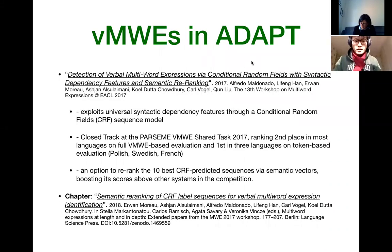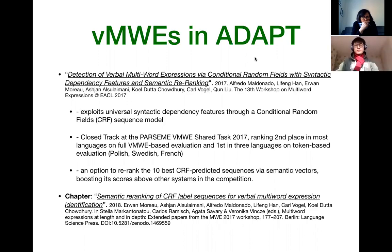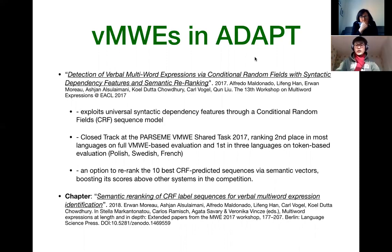Let's look at multi-word expression research in ADAPT earlier. I joined a shared task with a Trinity colleague in 2017 with Alfredo and Ash. In that shared task we submitted a system using Conditional Random Fields to detect verbal multi-word expressions. Another highlight was using semantic re-ranking to re-rank the CRF output — like the 10-best output — re-ranked with semantic vectors. This semantic re-ranking idea was originally from Alfredo, so if you're interested contact Alfredo and Ash, as we also finished a book chapter on this work.